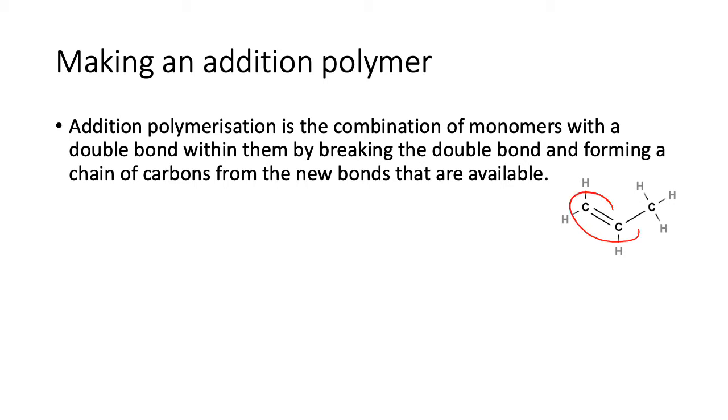So here's our double bond on our propene molecule. What you're going to do is break that double bond. Because it's a double bond, there are two things there and each of them has another thing there and that one happens to bond to another carbon but that doesn't make a difference, right? So we're going to break this double bond and turn it into a single bond.